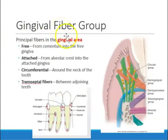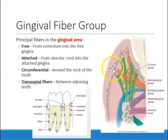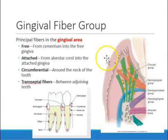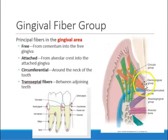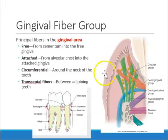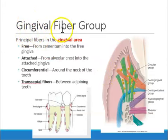The gingival fiber group consists of fibers attached to the gingival area or gums. Fibers that go to the free gingival area — the gums that are free from the tooth, not directly attached — are part of this group. Fibers that go to the attached gingiva, which is directly below the free gingiva, also remain within the gingival fiber group category.